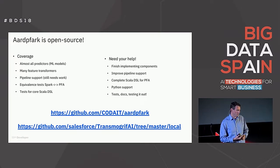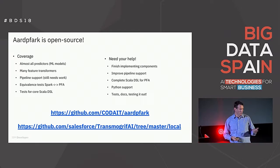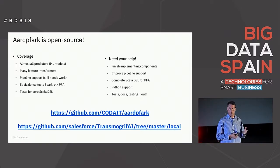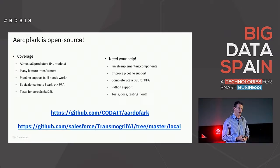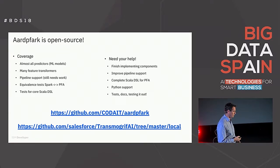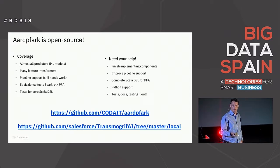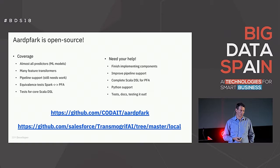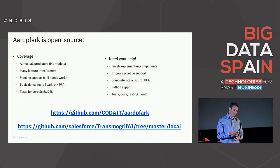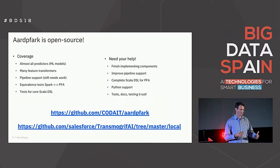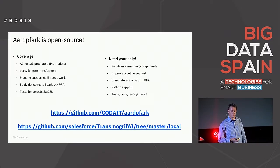Aardvark is open source — we released it in June, and you can find it at github.com/codait/aardvark. The coverage at the moment covers almost all predictors in Spark ML, many feature transformers, pipeline support, equivalence tests between Spark and PFA, and some tests for the core DSL. We need more help to round it out and to look beyond Spark — scikit-learn, LightGBM, XGBoost, and other popular frameworks. It's interesting to see increased adoption in the open source community: Salesforce released Transmogrify, an auto-ML toolkit for Spark ML, and for their local scoring and model export they're using Aardvark to export to PFA and Hadrian to score those models.